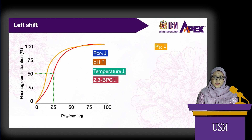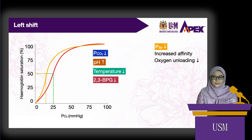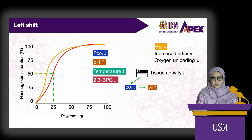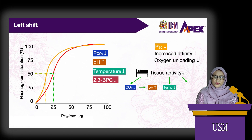When the curve is shifted to the left, P50 decreases, meaning 50% hemoglobin saturation is achieved at a lower-than-normal PO2. Hemoglobin has higher affinity for oxygen, so unloading of oxygen to the tissues is more difficult. The effect of decreased PCO2 and increased pH is again the Bohr effect. When tissue metabolism decreases, CO2 production decreases, hydrogen ion concentration decreases, and pH increases — so when oxygen demand decreases, oxygen is more tightly bound to hemoglobin and less is unloaded to the tissues. Also, with decreased tissue metabolism, less heat is produced, so low temperature shifts the curve left, and 2,3-BPG concentration also decreases, further shifting the curve left.